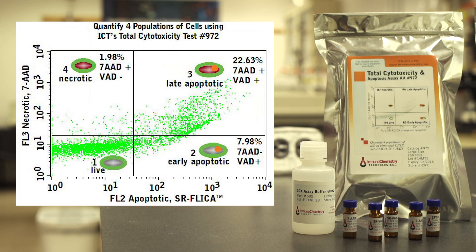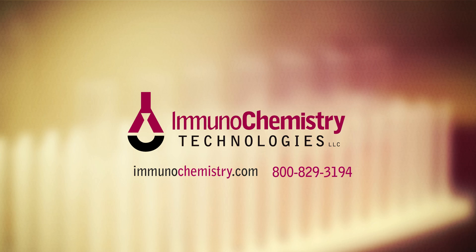Using the total cytotoxicity kit, four populations of target cells can easily be identified. Healthy target cells fluoresce green, early apoptotic cells fluoresce orange, late apoptotic cells fluoresce orange and red, and necrotic cells fluoresce red. For more information on cytotoxicity kits from Immunochemistry Technologies, please visit our website.